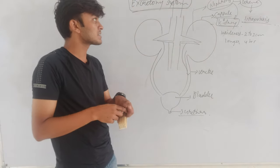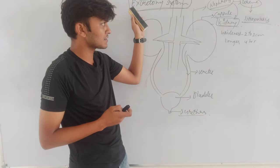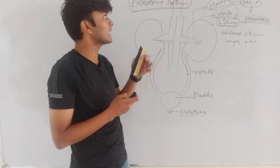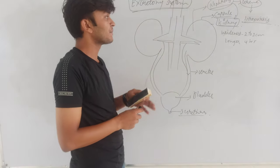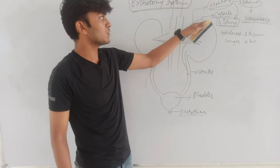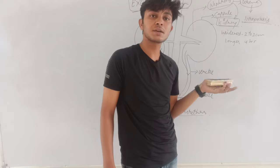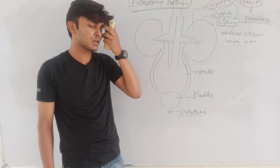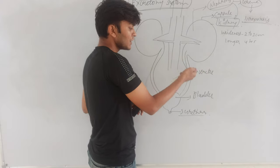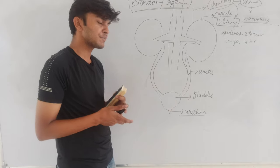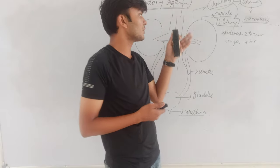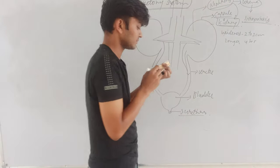To summarize, the excretory system consists of the kidneys, ureter, bladder, and urethra, along with the renal arteries and veins. The kidney is a bean-shaped structure, 2 to 3 cm wide and 4 to 5 cm in length, surrounded by a capsule, with nephrons inside responsible for uropoiesis. In the next video, we will talk about the structure of nephrons. I hope you have understood. Thanks, have a nice day.